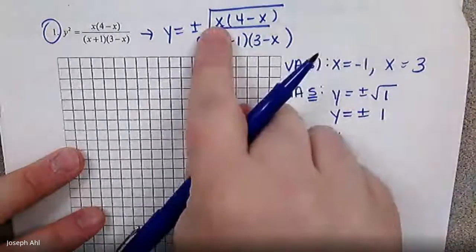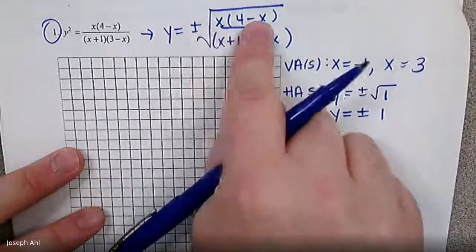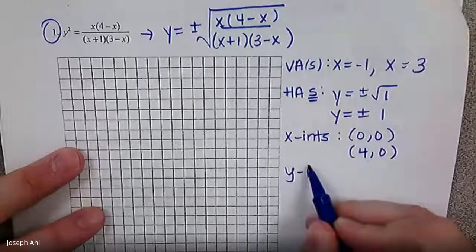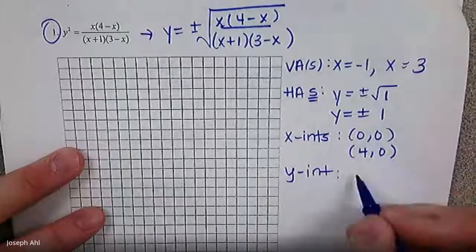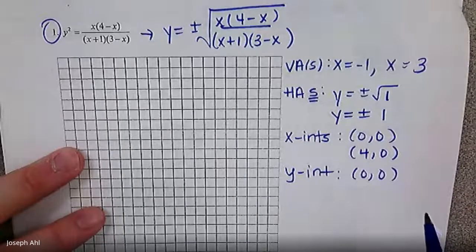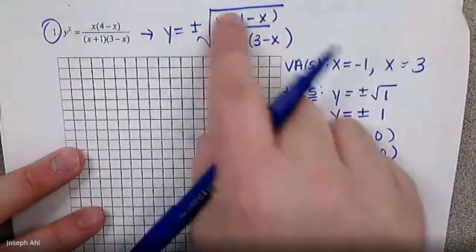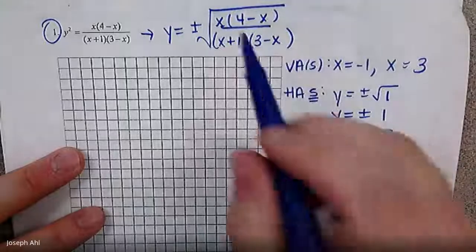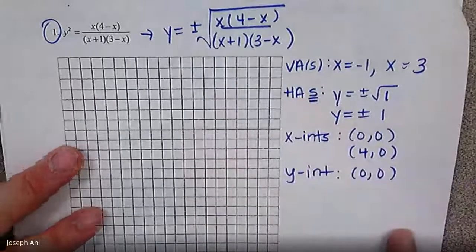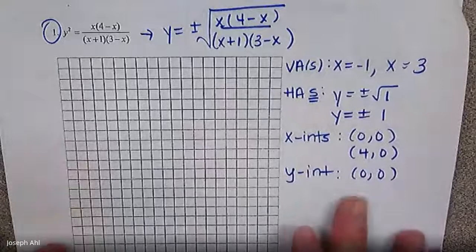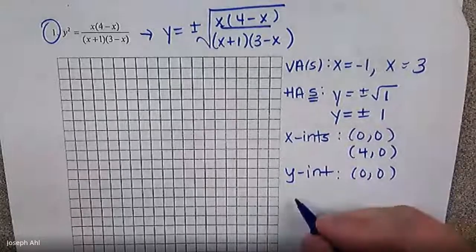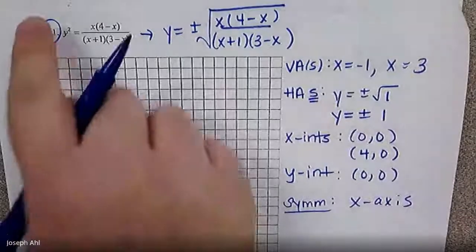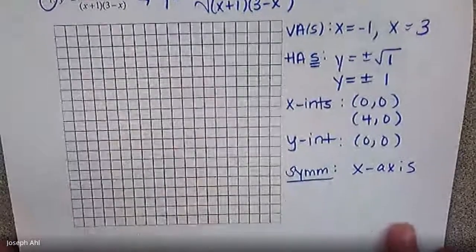For x-intercepts, we have two of them: one at 0 comma 0, from that factor of x, and one at 4 comma 0. If you have an x-intercept at 0, that's your y-intercept as well. Plugging 0 in for all the x's gives you 0 over 3, which is 0, and plus or minus the square root of 0 is 0. So the y-intercept is also at the origin. It's useful to note in advance that this will have x-axis symmetry because it has y squared in the equation.